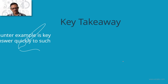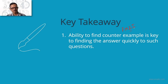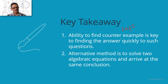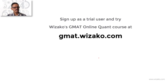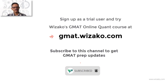Key takeaway from question 3: your ability to find a counterexample is critical. Keep FNZI in mind to hunt for counterexamples — fractions, negatives, zero, integers. If you cannot find a counterexample, there is also an algebraic approach, though it is more time-consuming. Sign up as a trial user and try the GMAT online course offered by Wizako at gmat.wizako.com — everything is covered in detail in a comprehensive course. Subscribe to this channel for updates on GMAT prep. Best wishes.